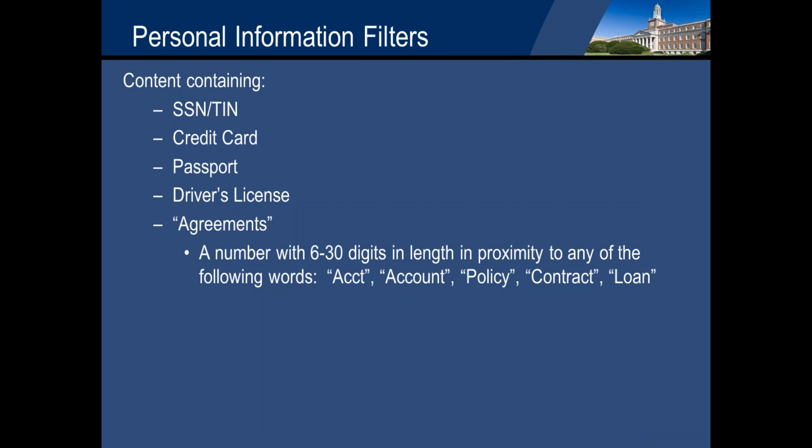As Clark was doing a lot of the hardware, architecture, and harvesting, some of the initiatives I took on with support from Integro was doing information gathering throughout the company to help us understand what our personal information and/or medical information could be. Through the interviewing process, we determined that the personal information we'd want to find would include SSNs, TIN numbers, credit card information, passport type information, driver's licenses, and what we're calling agreements — a number in length of six to thirty digits in proximity to words like account, full number, policy, contract, or loan.